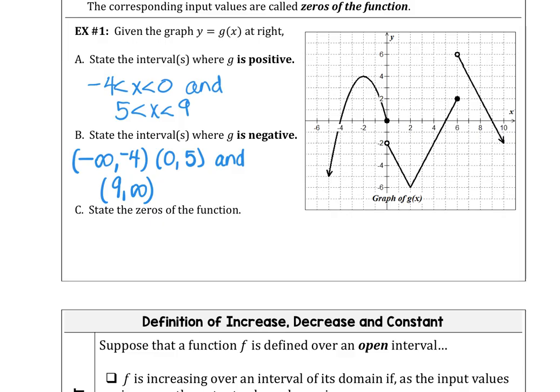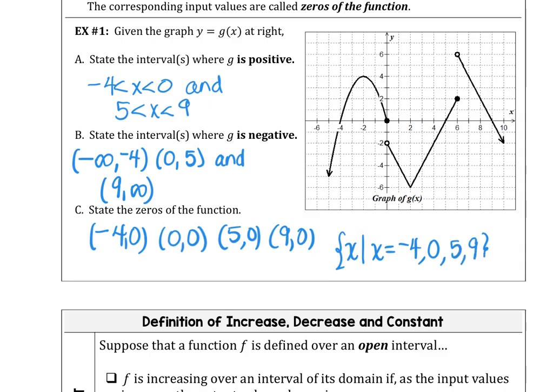You might also want to state that in set builder notation: the set of all x such that x is -4, 0, 5, or 9. That would be acceptable as well.